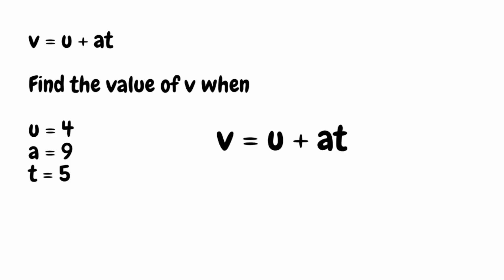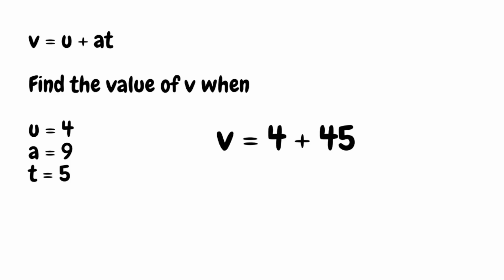Because u is on its own, we don't really need a bracket, so I can just swap the u for 4. I'm then going to substitute a, which is equal to 9. In the equation we're multiplying a by t, so I'm going to put this in a bracket — where a was, I now put a 9 in brackets. And I'm going to do the same for t, which equals 5, substituting that in brackets. So we've got v is equal to 4 plus 9 multiplied by 5. Following our order of operations, we do 9 multiplied by 5 first, which gives us 45. Then 4 plus 45 gives us 49.